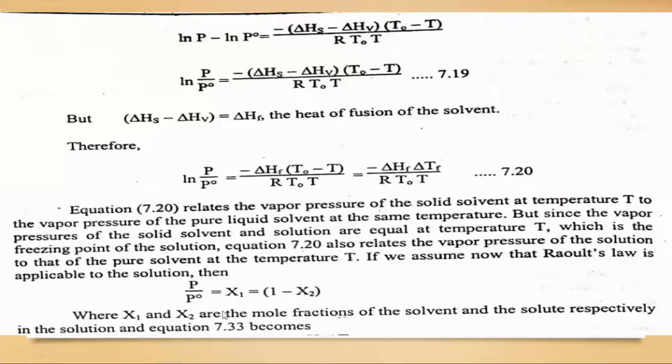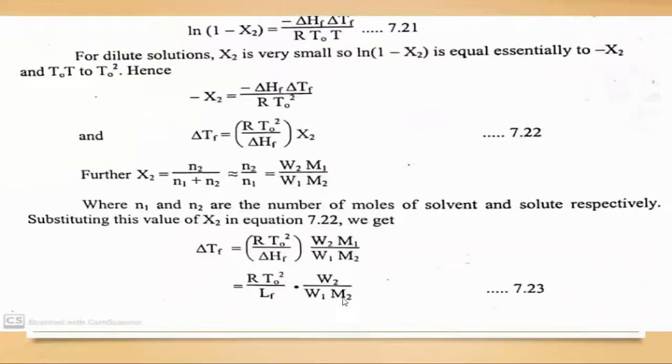So p = p_not(1 - x_2). Open this equation, and with this equation: log(1 - x_2) = -ΔT_f/(R × T_not × T).